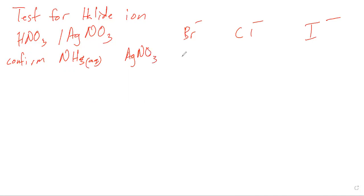Silver nitrate, what is the color of the precipitate with the bromide ion? It's cream. Chloride ion will give you a white precipitate. Iodine ion will give you a yellow precipitate. The bromide ion, when you're using the aqueous ammonia, will any of them dissolve?